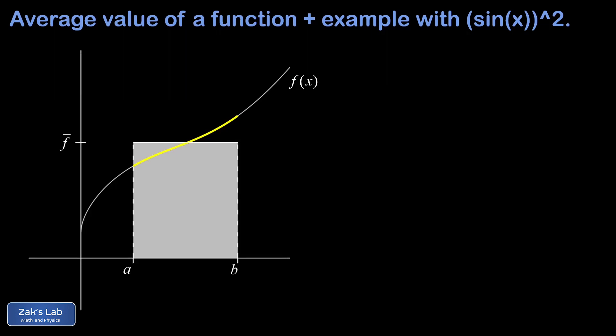We normally call this function f-bar, and we can see that it's a constant function because it's just a horizontal line segment on this interval. So again, the big geometric idea is that f-bar is going to bound the same area as f(x) on the interval a to b.